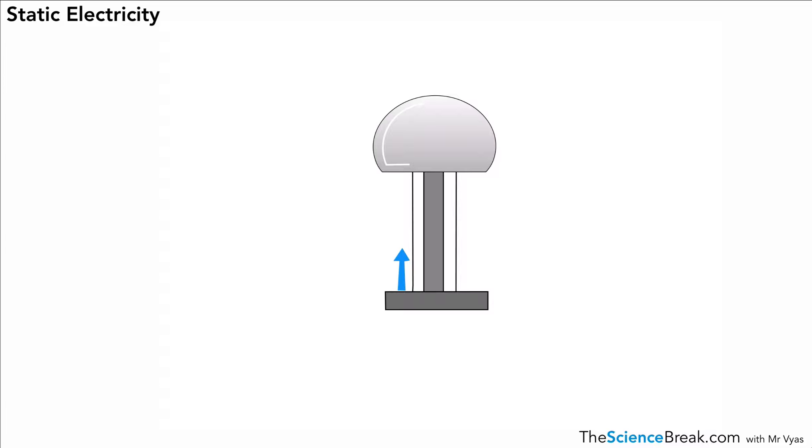Here we have what's called a Van de Graaf generator. There is a belt where the arrow is, as you can see, and that belt spins. And as it spins, it transfers electrons to that metal dome at the top. And over a period of time, over a short period of time, we get a massive buildup of electrons, or in other words a massive buildup of negative charge in the dome, so we can show that as a big negative sign.